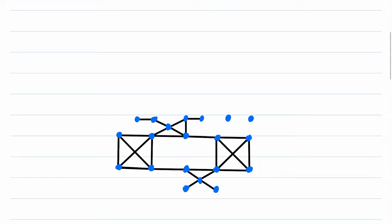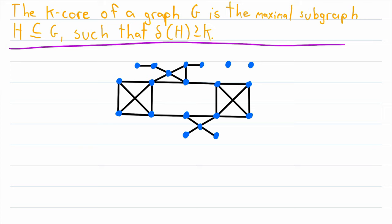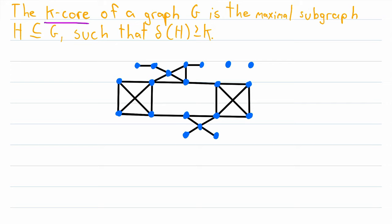Before we pay this beautiful graph much attention, let's go ahead and jot down the definition of K-Core. The K-Core — and we're generally allowing K to be any integer — the K-Core of a graph G is the maximal subgraph H of G such that the minimum degree of H is greater than or equal to K, so every vertex in H is adjacent to at least K other vertices. For a given value of K, the K-Core of a graph is unique, which follows pretty easily from the definition. Let me know in the comments if you'd like to see a video dedicated to a proof of that.